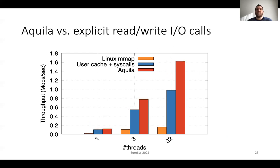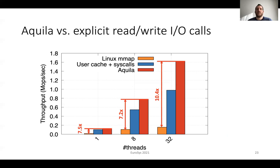The benefits of Akila compared to Linux EMAP are even higher. With a single thread, Akila provides 7.5 times higher throughput. With 8 threads, 7.2 times. And with 32 threads, 10.4 times higher throughput. This shows that Linux EMAP is not appropriate for data-intensive applications, and Akila overcomes these limitations.